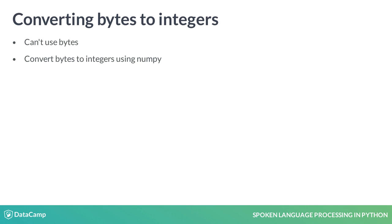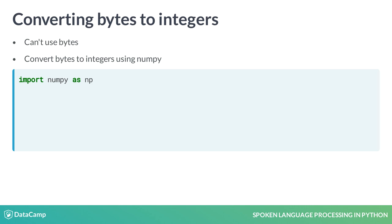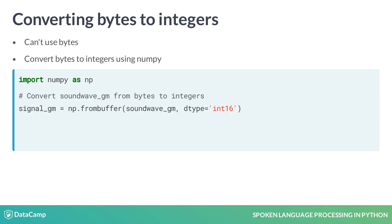To do this, we'll use NumPy. NumPy is a numerical Python library full of helpful functions. First, we'll import it with the common alias np to avoid typing NumPy every time. Then, the NumPy method we'll use to convert our bytes to integers is fromBuffer. FromBuffer turns a series of data into a one-dimensional array of a specified data type.